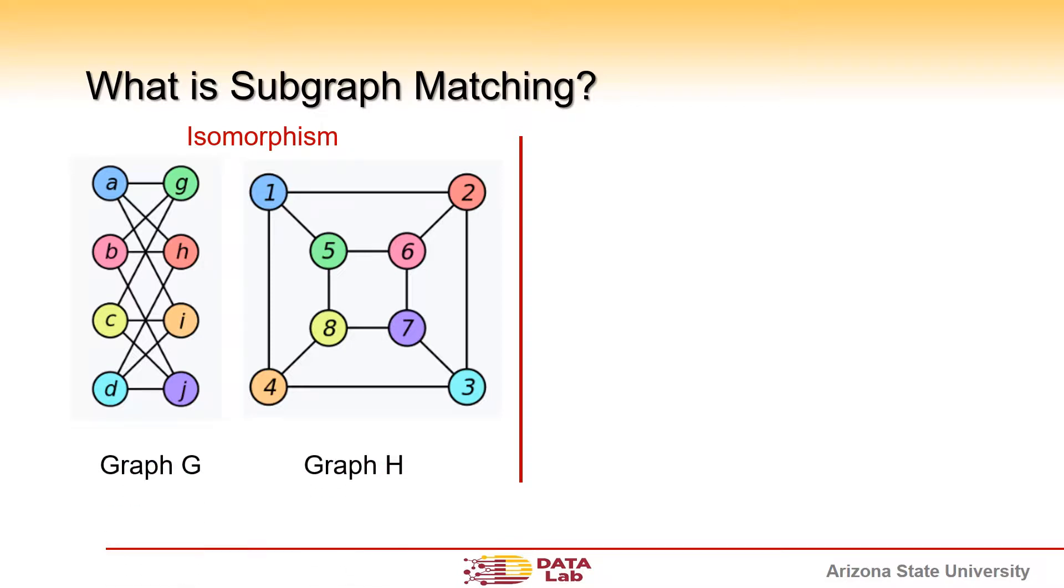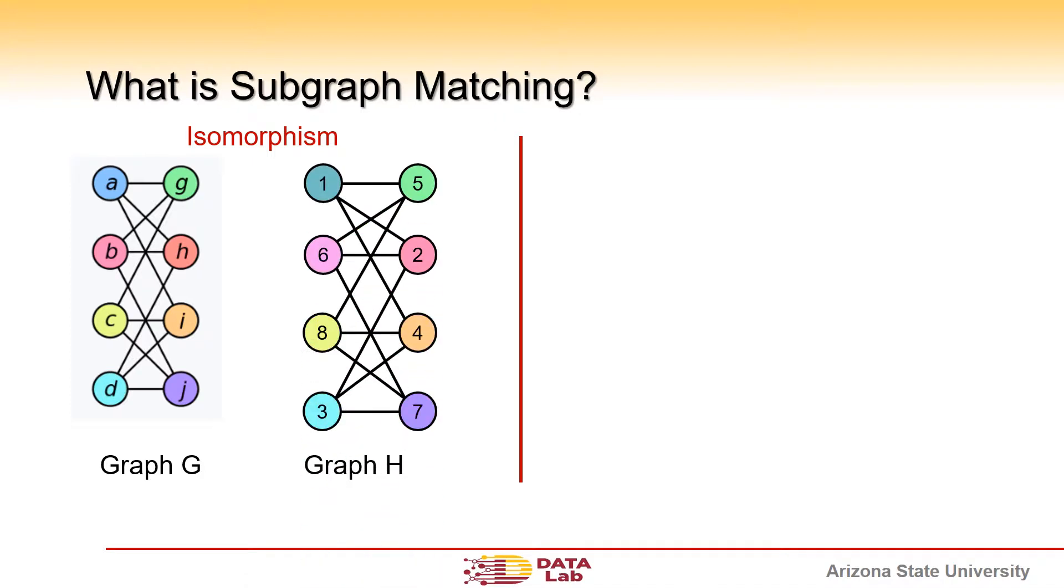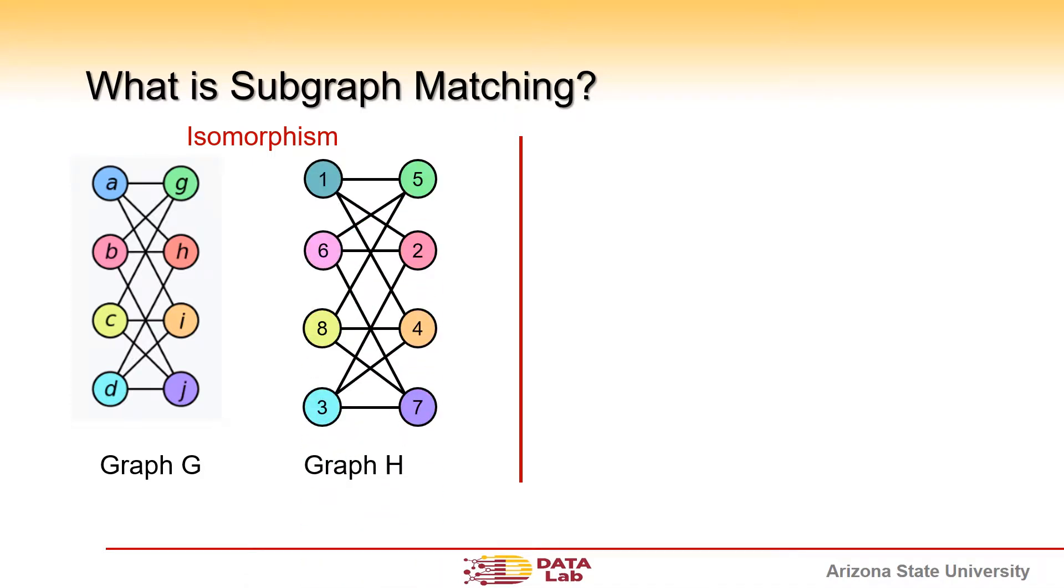If there exists a bijection between graph G and graph H, they are isomorphic, which means they are exactly the same in the graph theory perspective.